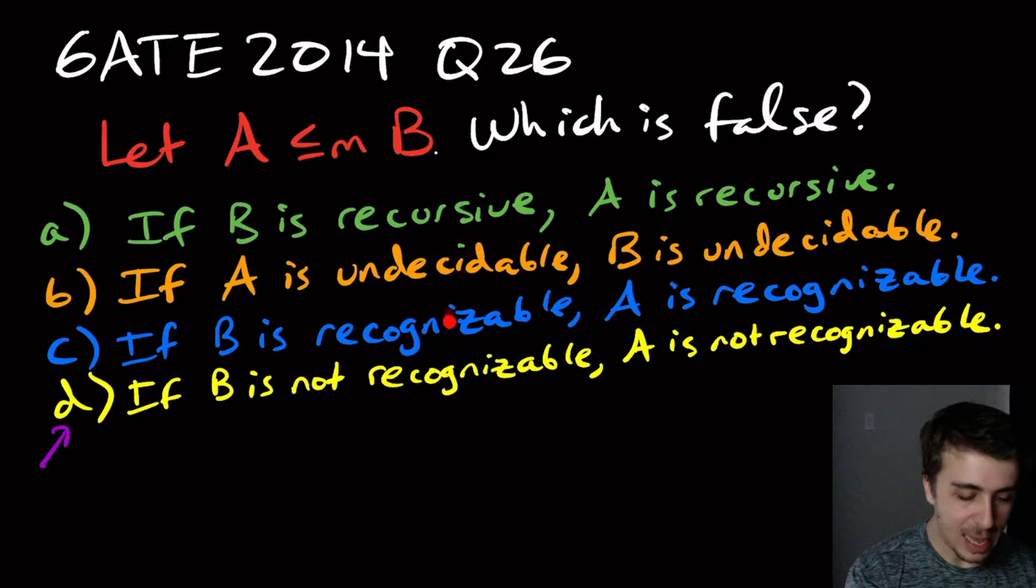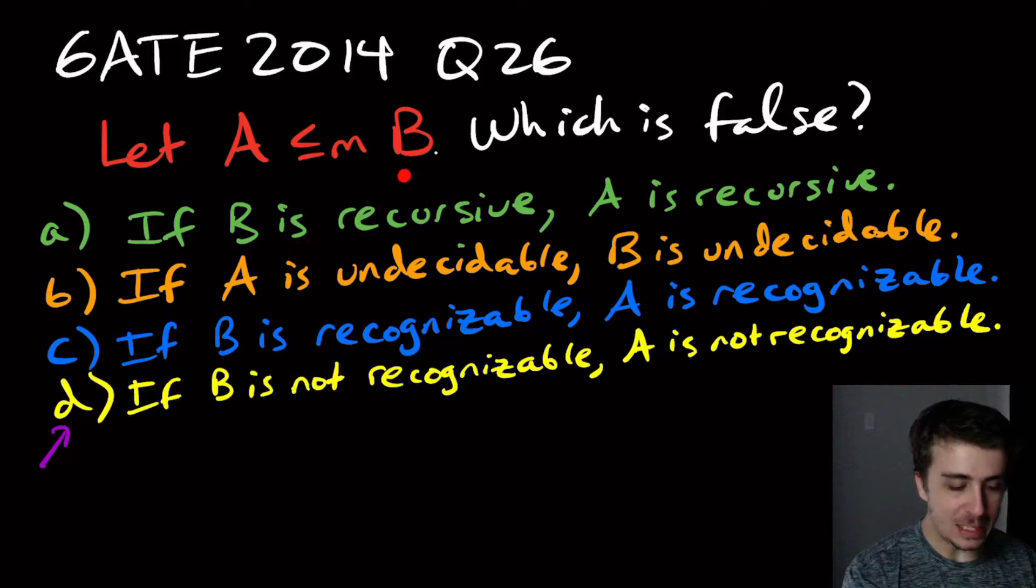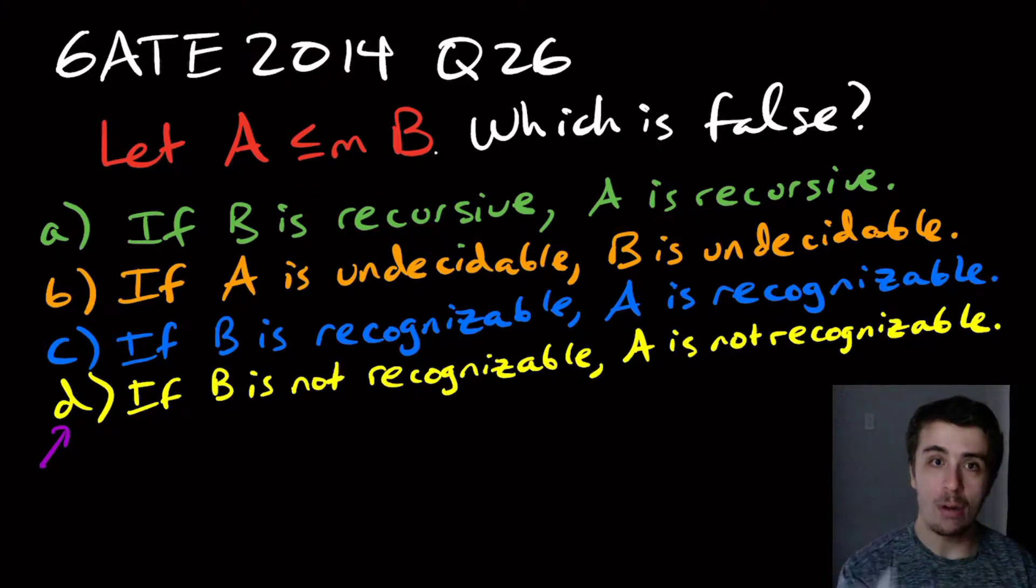So why is A, B, and C true? Well, if B is decidable, let's just look at this one because the other ones are similar. If B is decidable, then this says that A is decidable. Well, how can we decide A? Well, remember for mapping reductions right here, we have a computable function that converts instances over here to instances on the right side. So for whatever input that we get, we don't know whether it's in A, the set A or not.